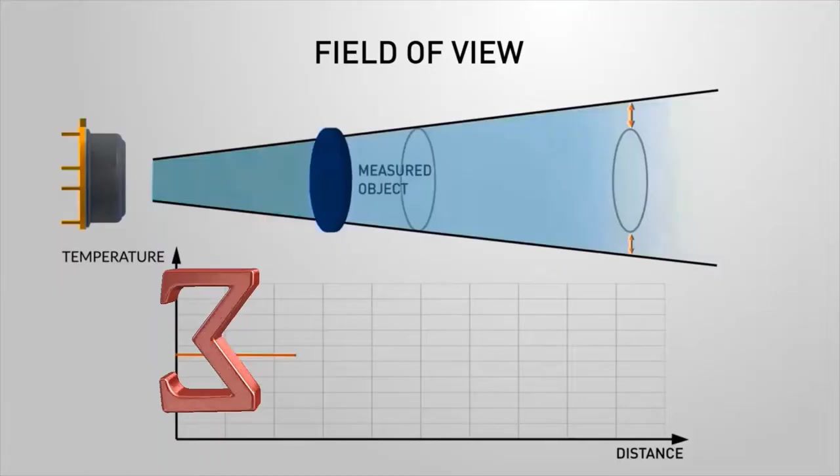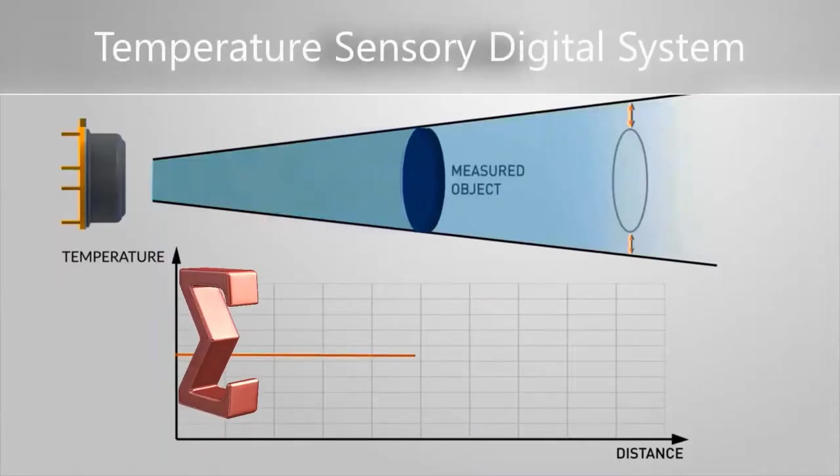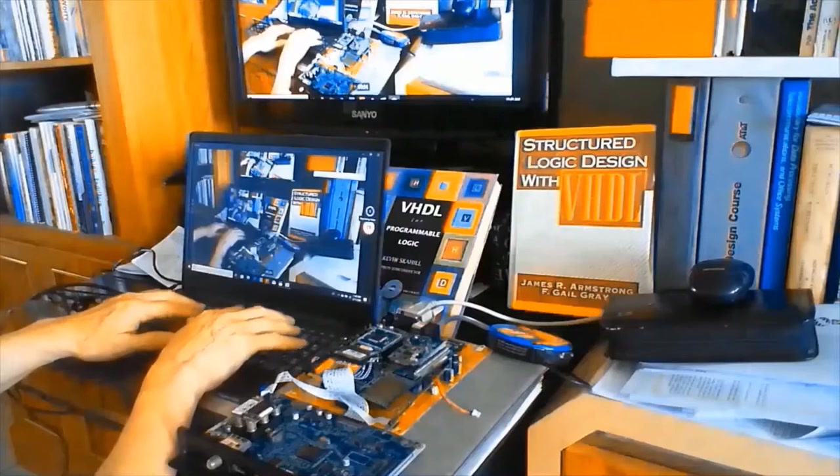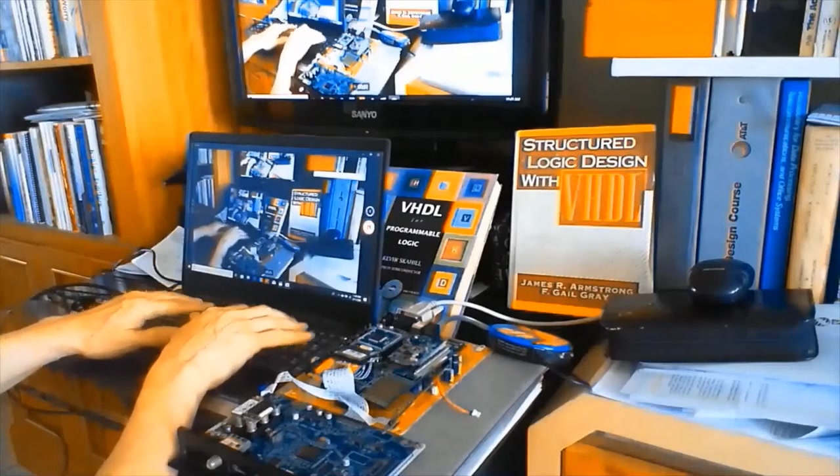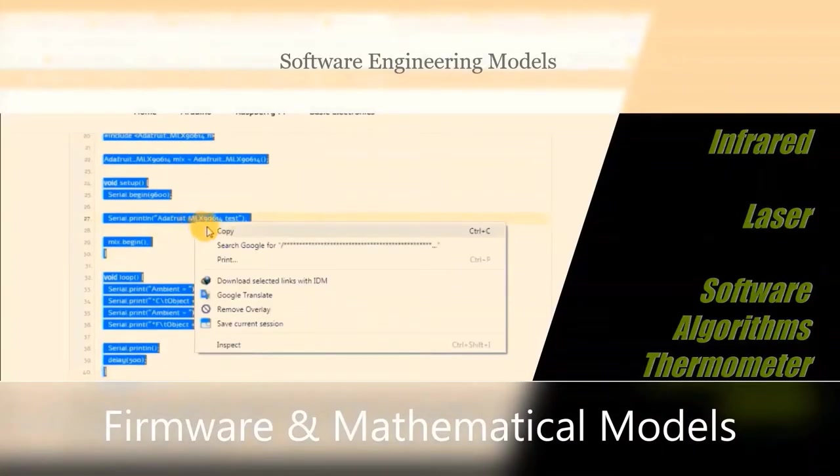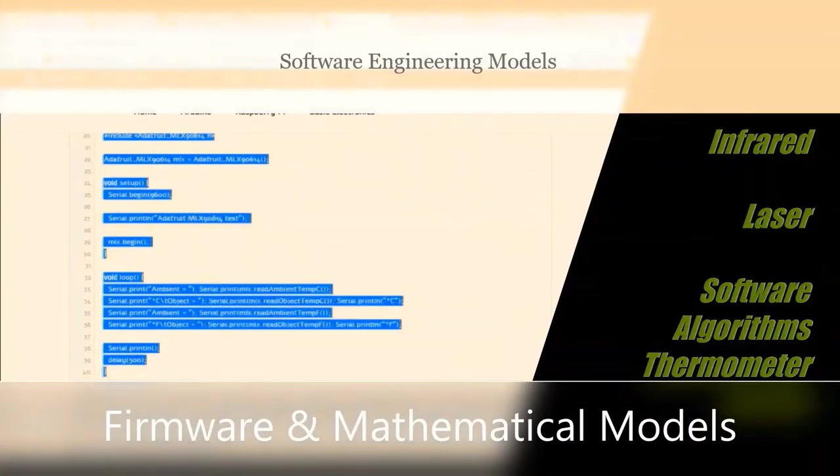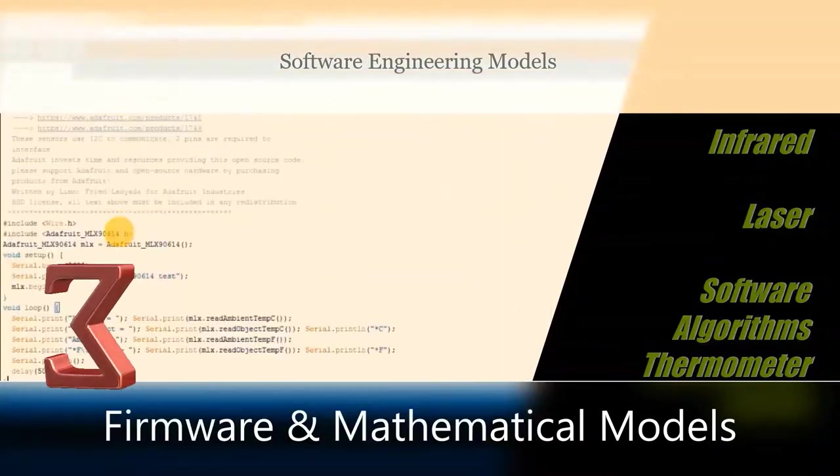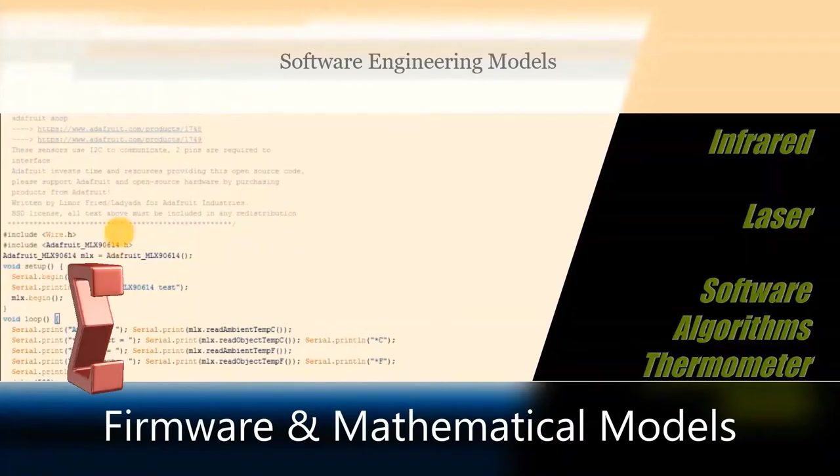Any object at a temperature above absolute zero emits infrared radiation. The human eye cannot see this type of radiation at all. Thus, infrared measuring devices are required to acquire and process this information.